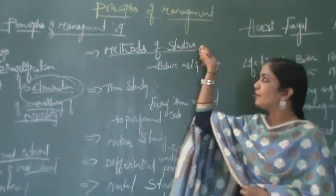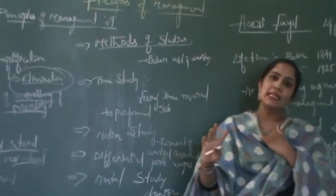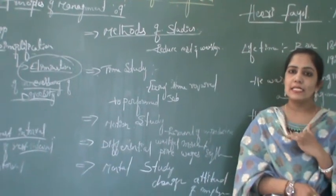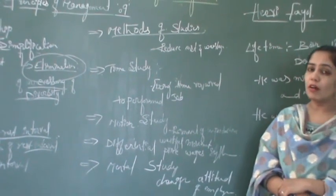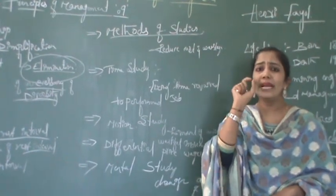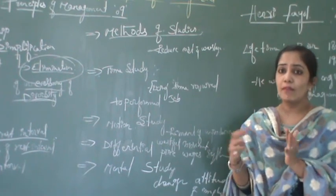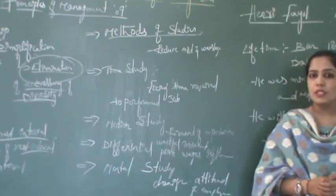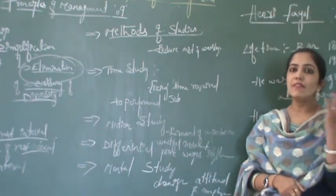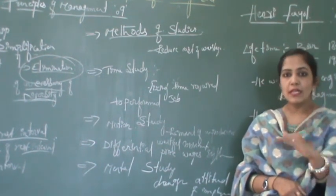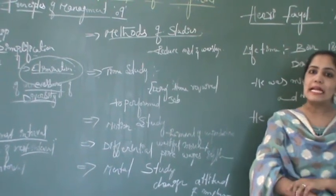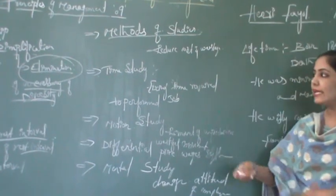The next technique is method study. Method is the adoption of techniques. There are many techniques available for an organization to adopt. The reason for adopting methods is to reduce cost and wastage. The company should adopt the best method of production. By adopting the best method, the cost of production is reduced and wastage is eliminated, allowing the company to offer fair prices to customers, who will then more easily adopt the company's products.